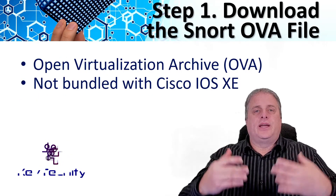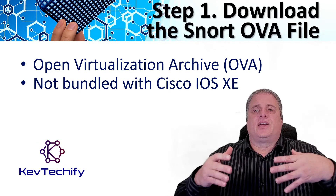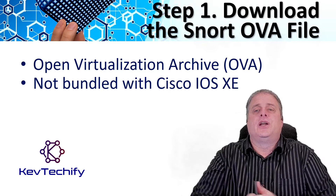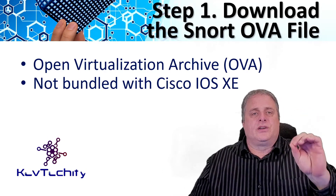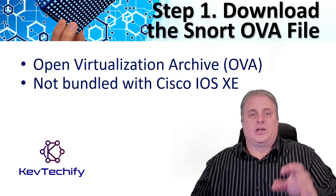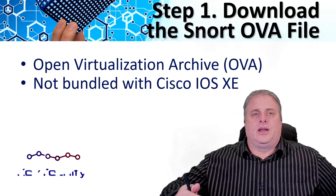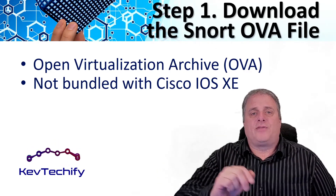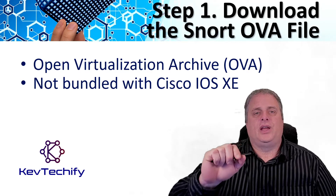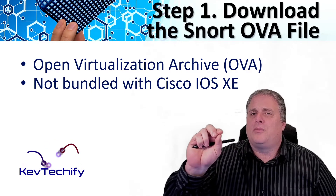Step one is to download the SNORT OVA file. OVA stands for Open Virtualization Archive — a compressed, installable version of a virtual machine. The service OVA file is not bundled with Cisco IOS XE release images, so it doesn't come with your IOS automatically. The OVA files may be pre-installed in the flash on the router, but it's recommended that you download the latest OVA from Cisco.com to ensure you have the most current configurations and settings.